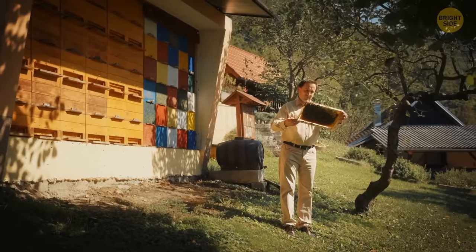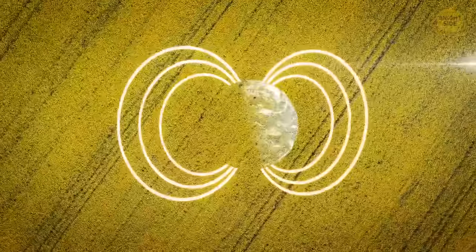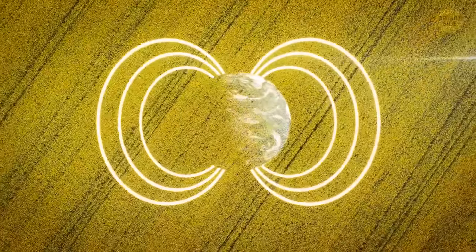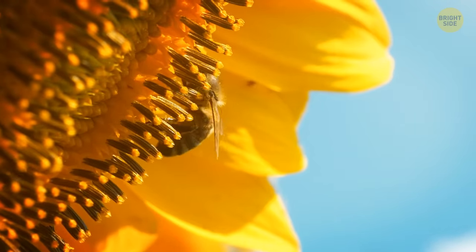They live in a sensory world that's totally different from ours, seeing things in ultraviolet and polarized light. They can even sense the Earth's magnetic and electrical fields. This helps them figure out which flowers have already been visited by other bees.